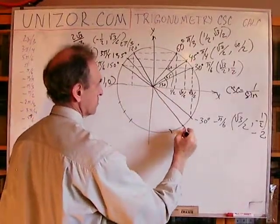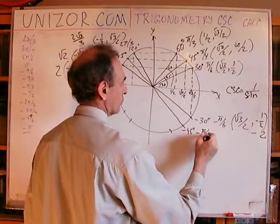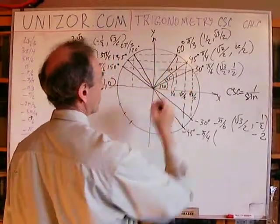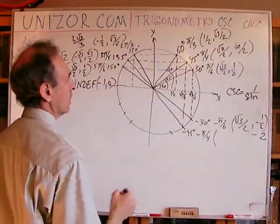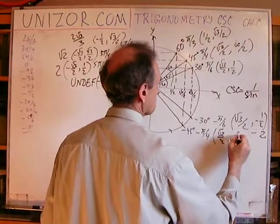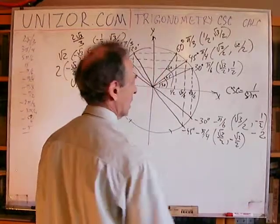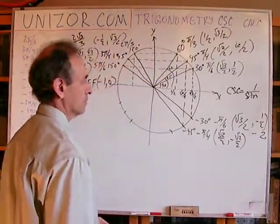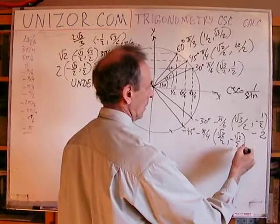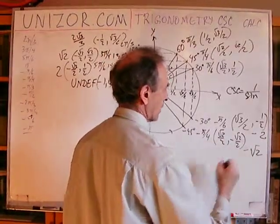Next is minus 45 degrees, or minus pi over four. The symmetry is with plus 45 degrees, so I retain the abscissa — square root of two over two — and change the sign of the ordinate. The cosecant would be minus two over square root of two, which is minus square root of two.